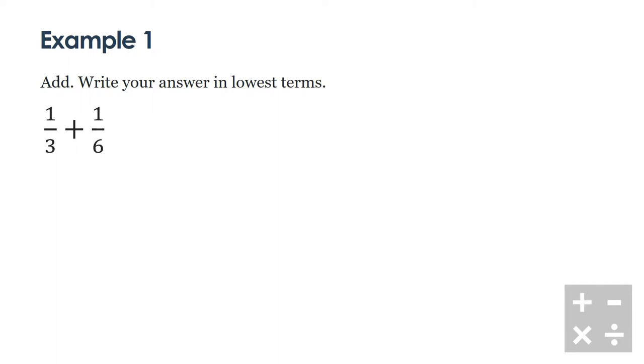We want to get this into a common denominator before we can add them together because we don't know how to add denominators together. It just doesn't work. We're going to be looking for the lowest common multiple of both 3 and 6.